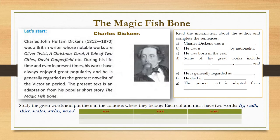Before we start reading the story, let us know something about the writer. The full name of the writer is Charles John Huffman Dickens, popularly known as Charles Dickens. He was born in 1812 and he died in 1870. He was a British writer whose notable — notable means famous — works include Oliver Twist.